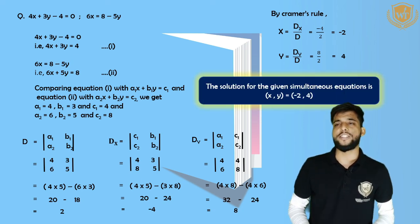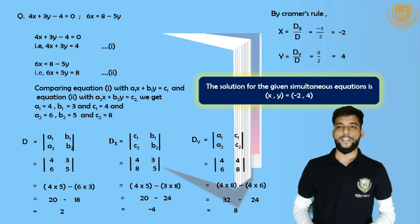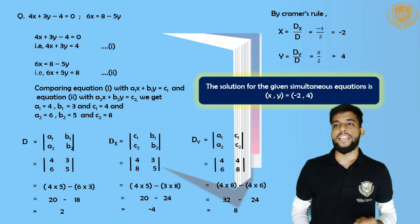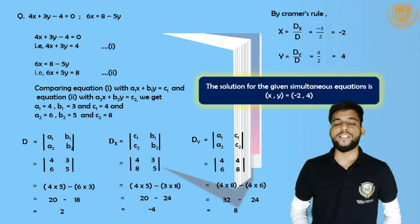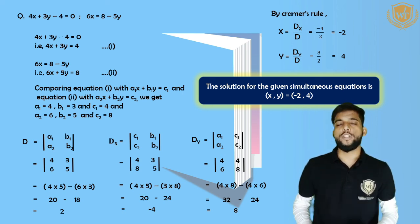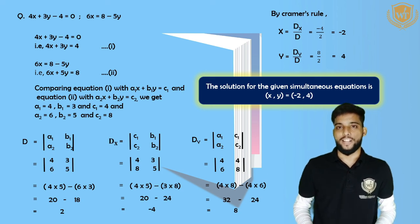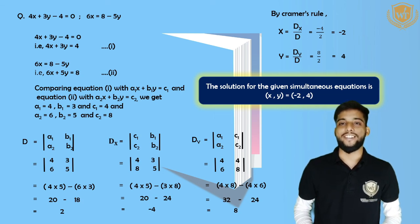The solution for the given simultaneous equations is X comma Y equals minus 2 comma 4. With this we complete Cramer's Rule. Please like, share and subscribe to the channel. Let us know if you face any difficulty in the comment section. We will see you in the next video — till then, everyone stay home, stay safe, take care.